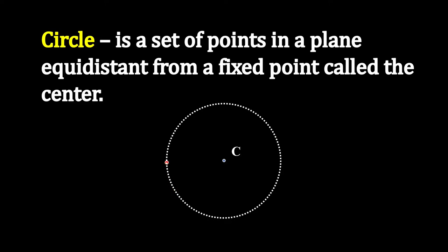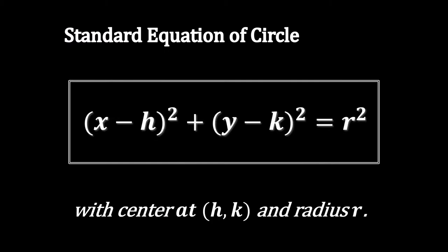Circle is a set of points in a plane equidistant from a fixed point called the center. The standard equation of circle is the quantity (x - h)² plus the quantity (y - k)² is equal to r² with center at (h,k) and radius r.